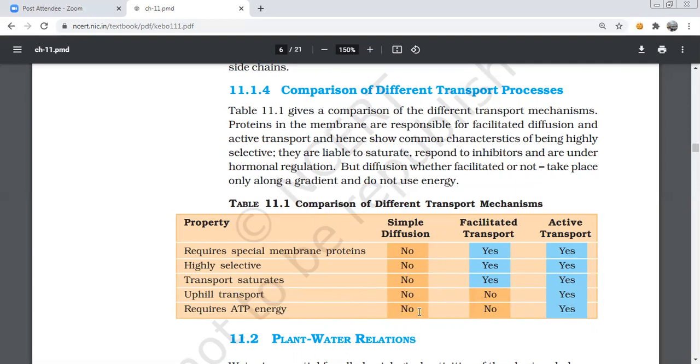These two don't use energy, only this one uses energy. So we have simple diffusion and facilitated transport - these fall under passive transport. Only active transport is separate; passive includes these two, active is only this one.